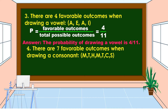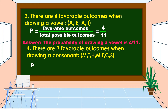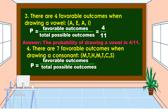For the last question, there are seven favorable outcomes when drawing a consonant. The consonant letters in the word MATHEMATICS are M, T, H, M, T, C, and S — so we have seven favorable outcomes. Using the formula P is equal to favorable outcomes over total possible outcomes, the favorable outcomes is 7 and the total possible outcomes is 11. Therefore, the probability of drawing a consonant is 7 over 11.